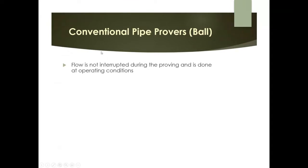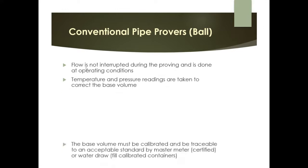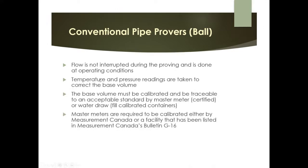For the conventional pipe prover: flow is not interrupted during proving and it is done at operating conditions. Temperature and pressure readings are taken to calculate the base volume. The base volume is calibrated and traceable to an acceptable standard, either by a certified master meter or water draw. Master meters must be calibrated by Measurement Canada or a facility listed in Measurement Canada's legislation.